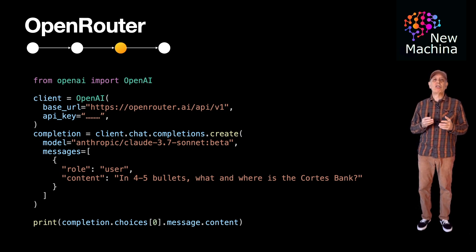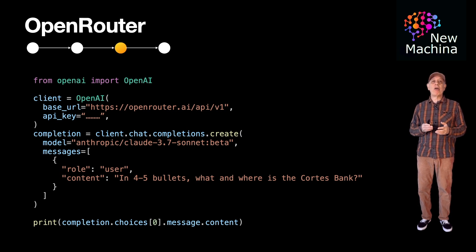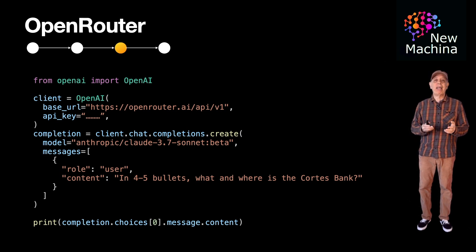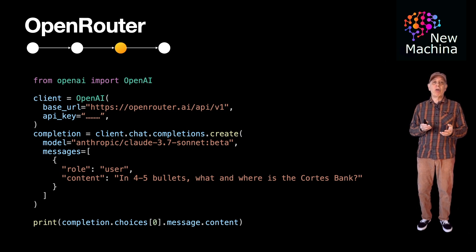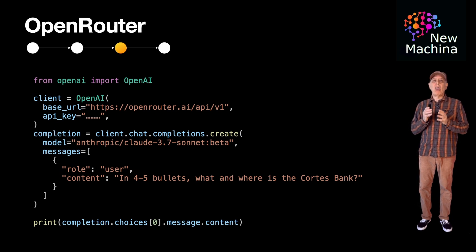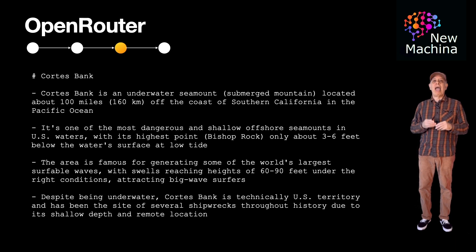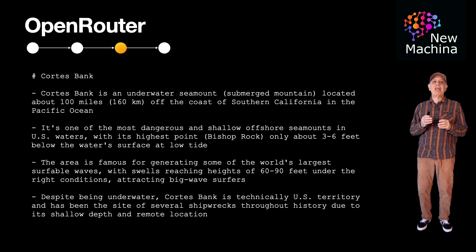Running this first script, the request goes to OpenRouter, and behind the scenes OpenRouter directs the prompt to Anthropic's Claude Sonnet 3.7. The implementation details of how OpenRouter handles these calls are proprietary, but as a developer using this service, you should just know Claude Sonnet 3.7 is handling the prompt. After a few seconds, Claude Sonnet 3.7 responds: Cortez Bank is an underwater seamount, and it goes on to describe its general location, geography, big wave surf, and territorial aspects of this part of the Pacific. This is a good answer.